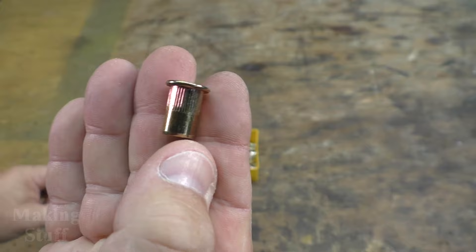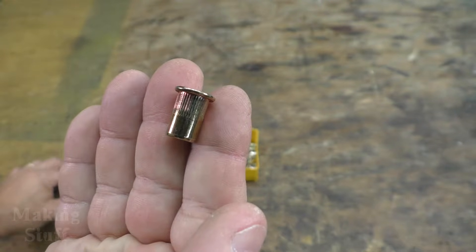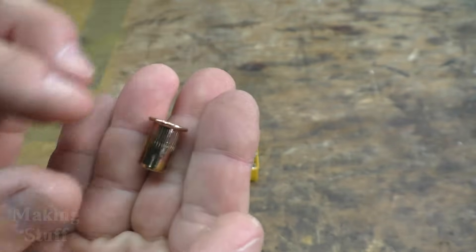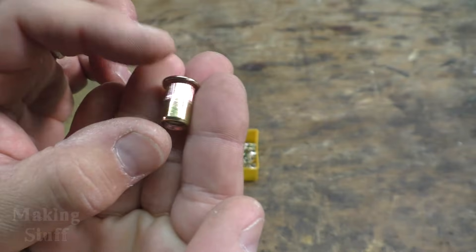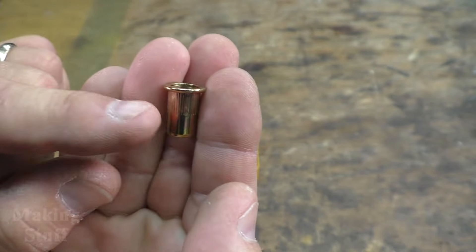It does not have threads and it is set just like a rivet, hence the name rivet nut. You just use a rivet setting tool to set it into your workpiece.